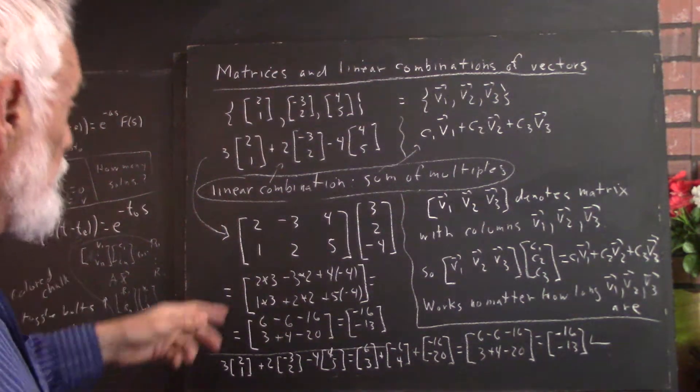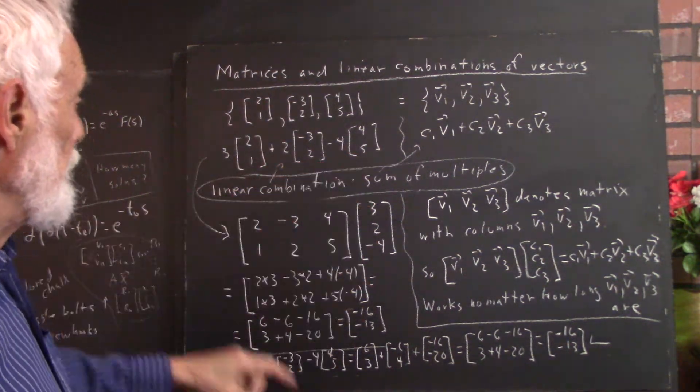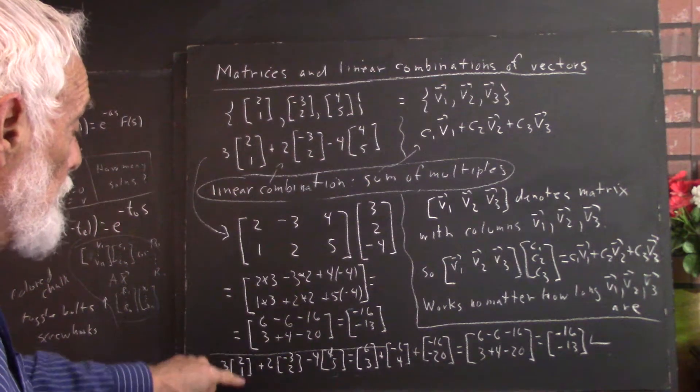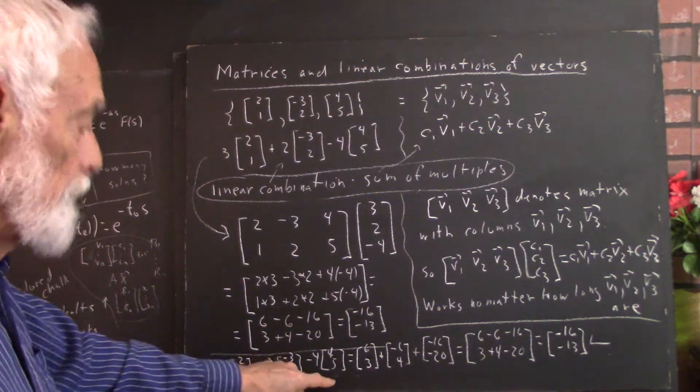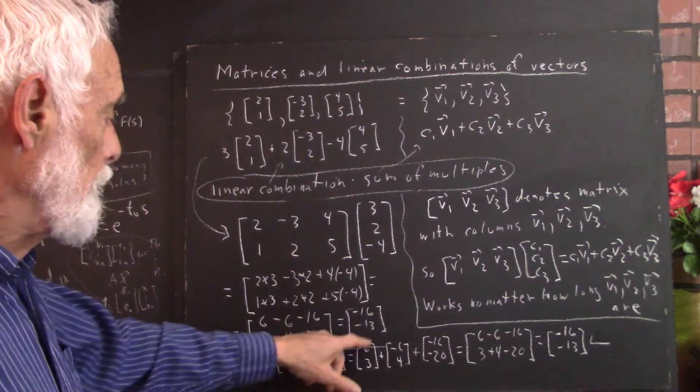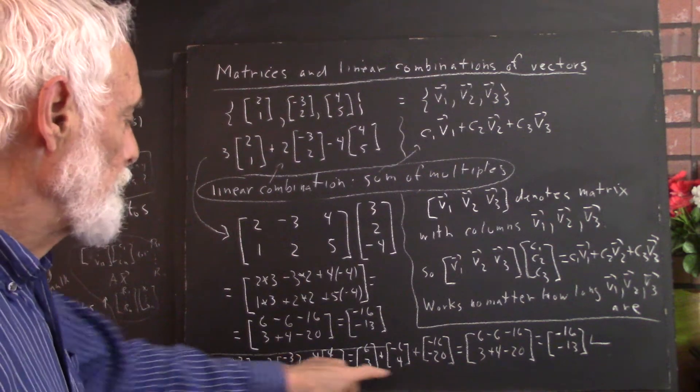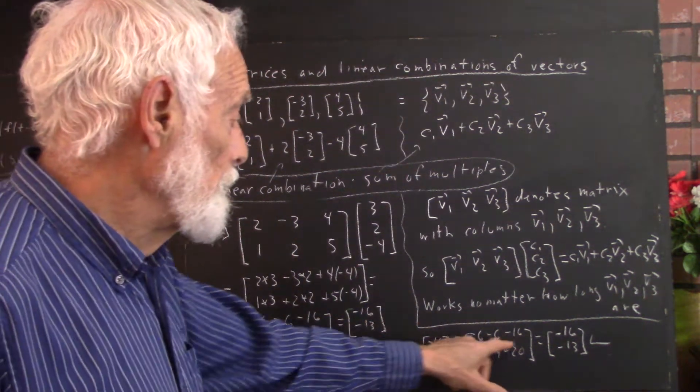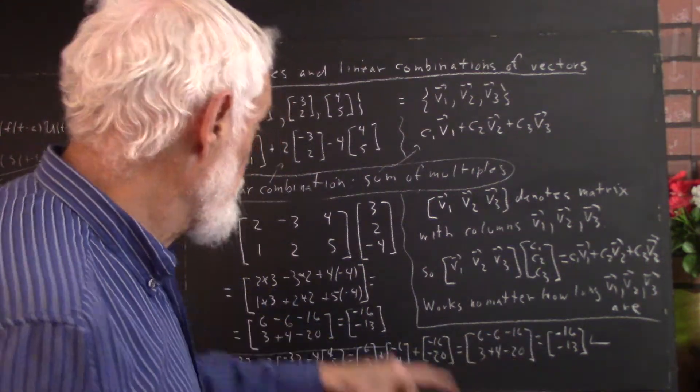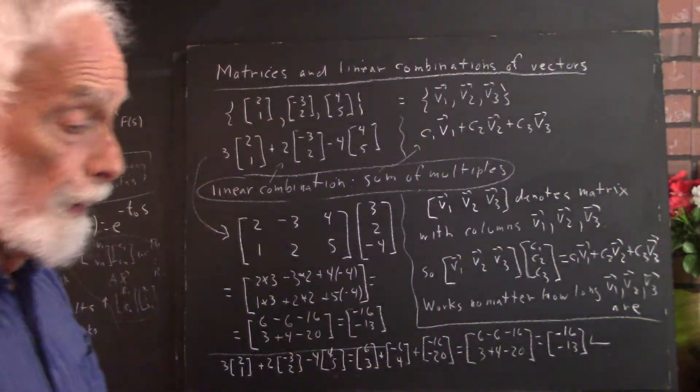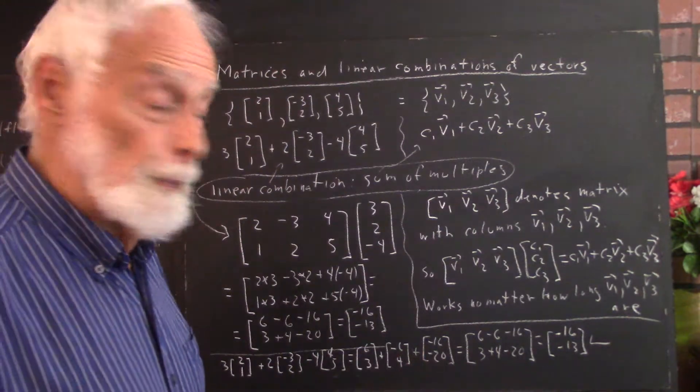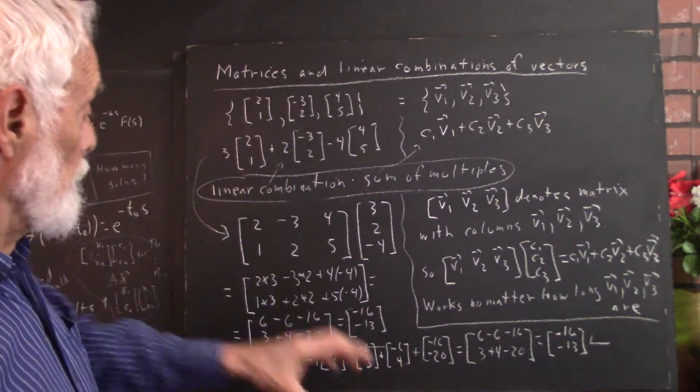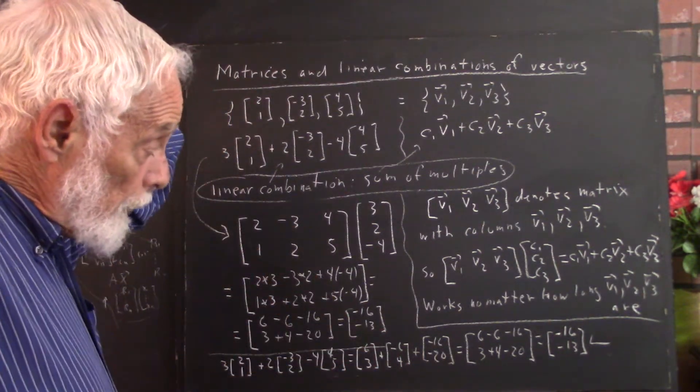Now, of course, we could have added these up by simply multiplying 3 by 2, 1, 2 by negative 3, 2, and so forth. 3 times 2, 1 is 6, 3, and so forth. We get the three multiples, and we add those, and we get the result. And it checks with the result of the matrix calculation. So it should be clear that the matrix calculation works, but you really want to understand why the matrix calculation works.